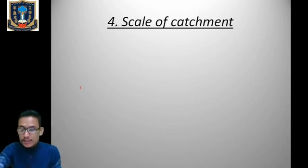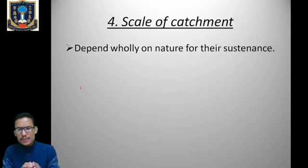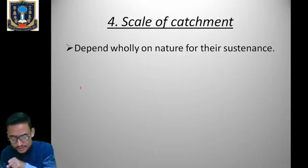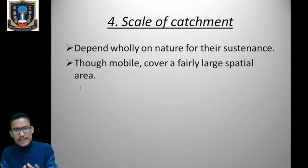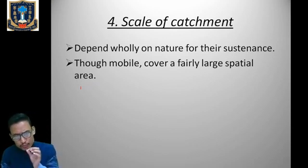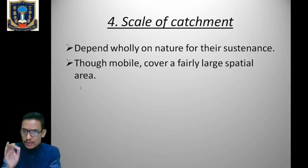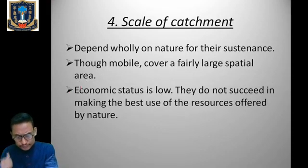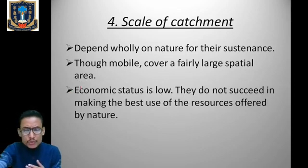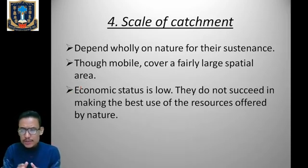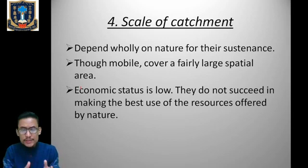Regarding scale of catchment: hunting and gatherers depended totally on nature and the local environmental conditions for sustenance. Their lifestyle was primitive and requirements were limited to just food and shelter. Though they were mobile and covered a fairly large spatial area, they did not succeed in making the best use of the resources offered to them and had a lower economic status.